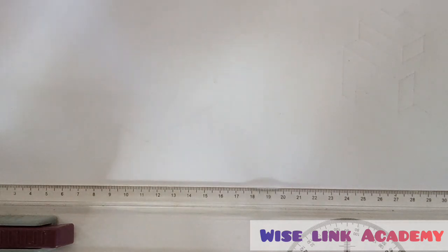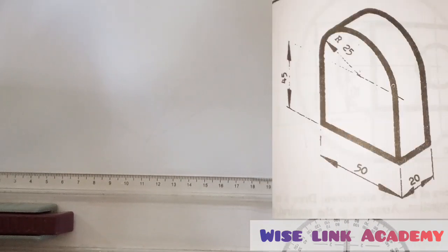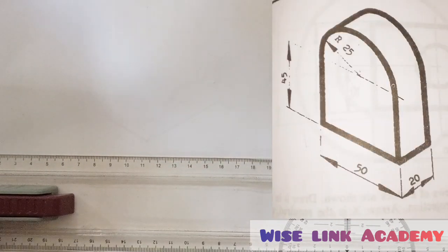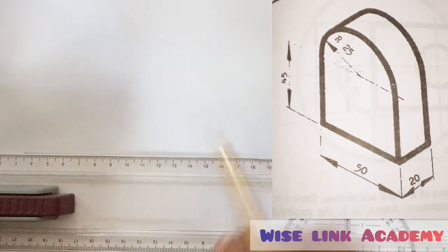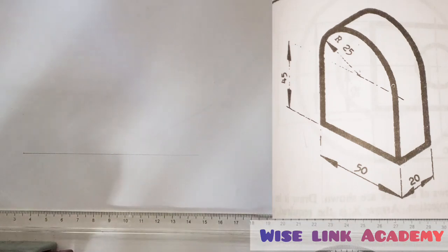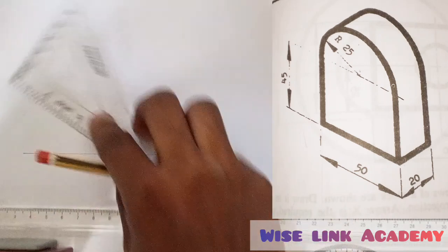Good day everyone, welcome to Wise Link Academy. Today we want to reproduce the object you are seeing at the right corner of the screen. This is an isometric drawing. I'll draw my horizontal line, then I will draw my inclined 30 degree lines this way.